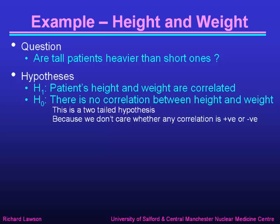Let's take as an example some data on height and weight, and ask the question: are tall patients heavier than short ones? The experimental hypothesis H1 is that patients' height and weight are correlated, so the null hypothesis is that there is no correlation between height and weight. Notice this is a two-tailed hypothesis, because we don't care whether any correlation is positive or negative — we're just looking for a correlation in any direction.